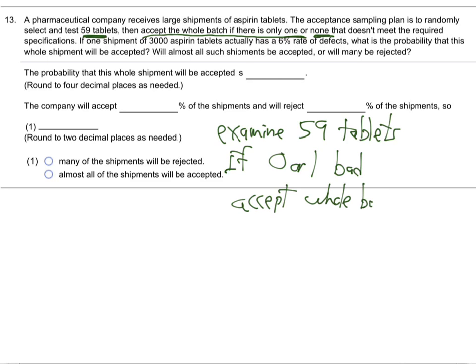Quality control experts have to come up with different plans at factories for trying to keep quality without spending too much money on labor to look at every single product all the time. They use statistics — they calculate the probabilities of bad stuff getting through — to control their product without wasting too much money on labor. So the plan is: 59 tablets, if zero or one are bad, accept the whole batch.